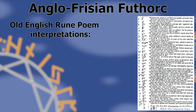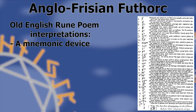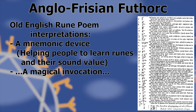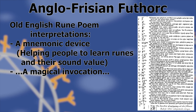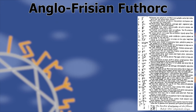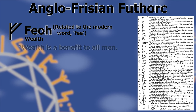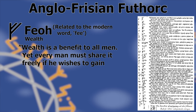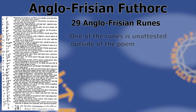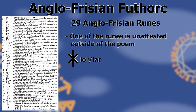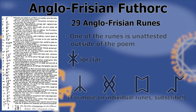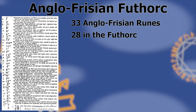The Old English rune poem has been interpreted as a mnemonic device, an equivalent to songs that children sing to learn their alphabet — A is for apple, B is for bear, and so on. It's also been interpreted as a magical invocation, but the former is much more likely, as the use of words for runes would assist in remembering the runes and their sound value. The Old English rune poem begins with Feoh, meaning wealth: 'Wealth is a benefit to all men, yet every man must share it freely if he wishes to gain glory before the Lord.' The poem counts altogether 29 Anglo-Frisian runes, making for a grand total of 33 potential Old English runes, only 28 of which are part of the full Futhork.